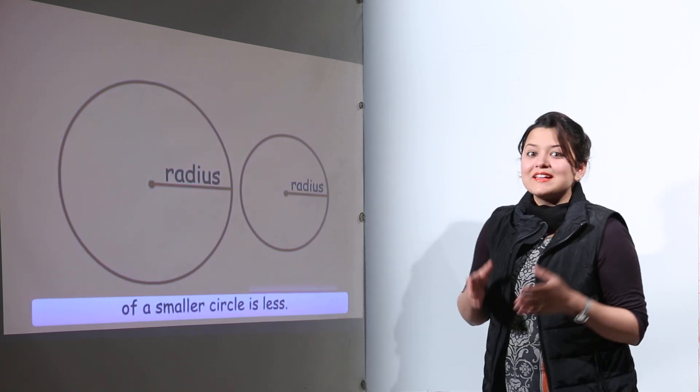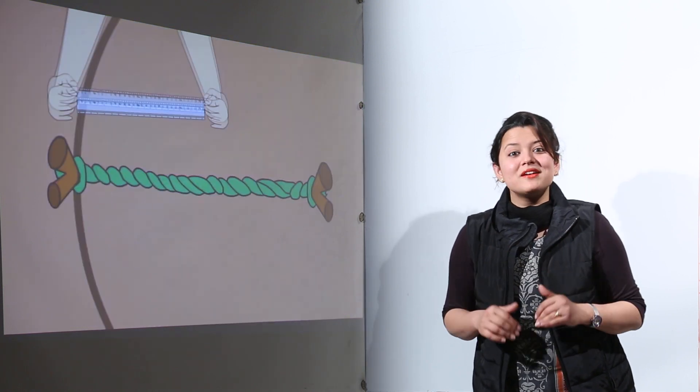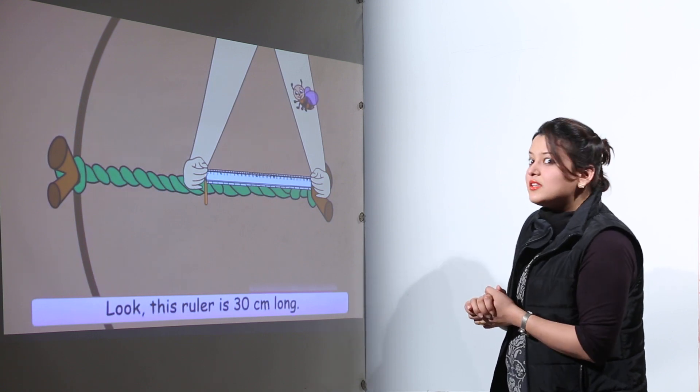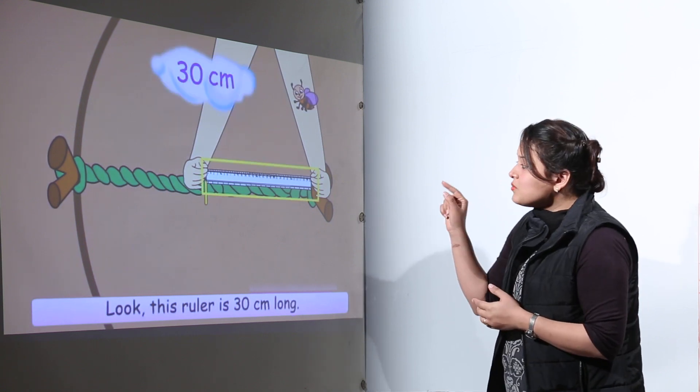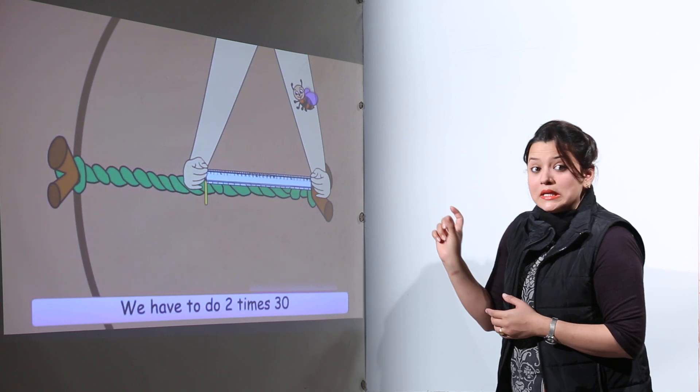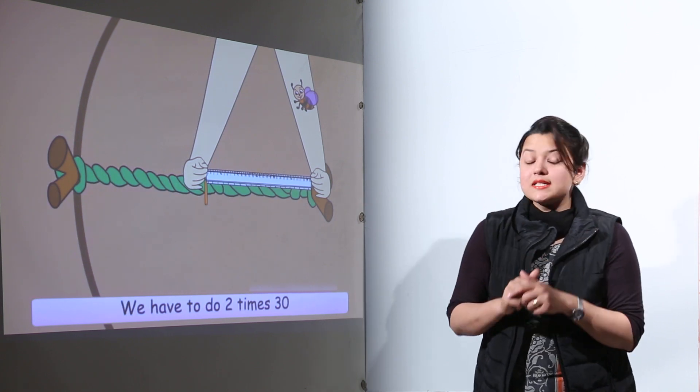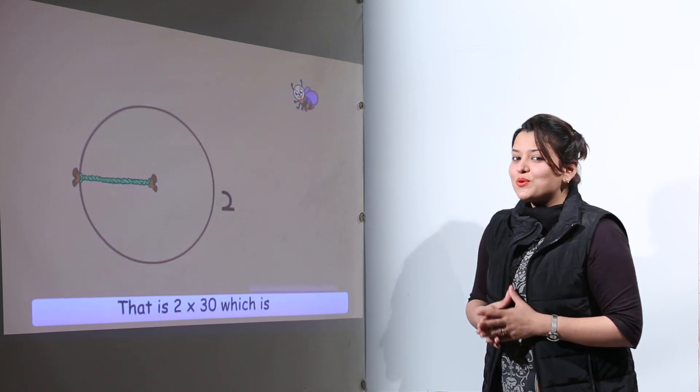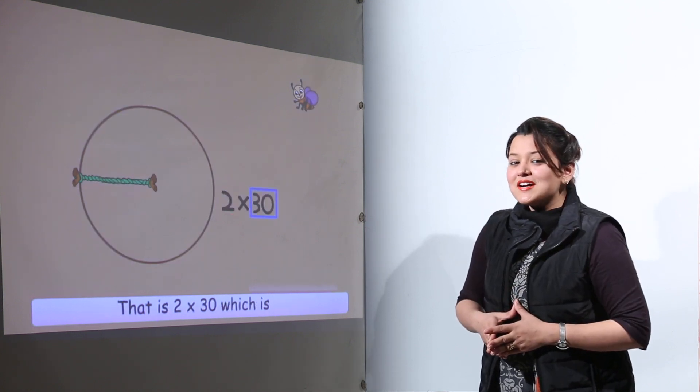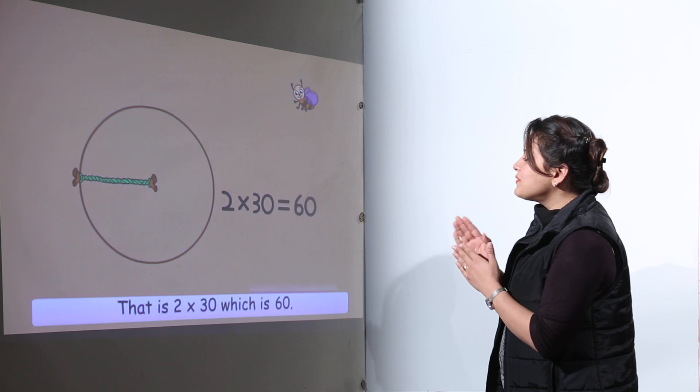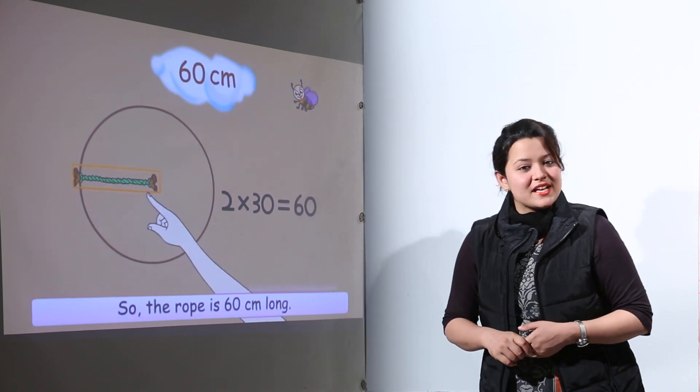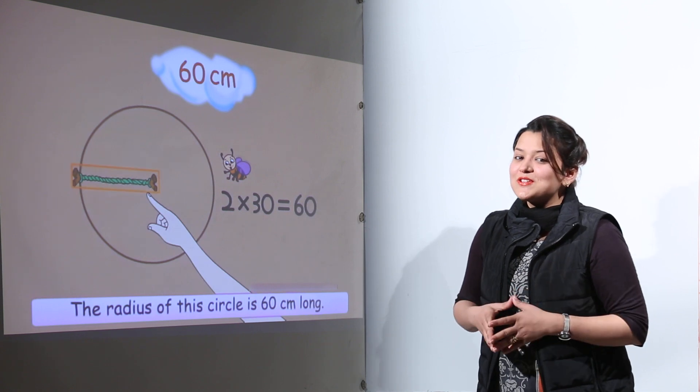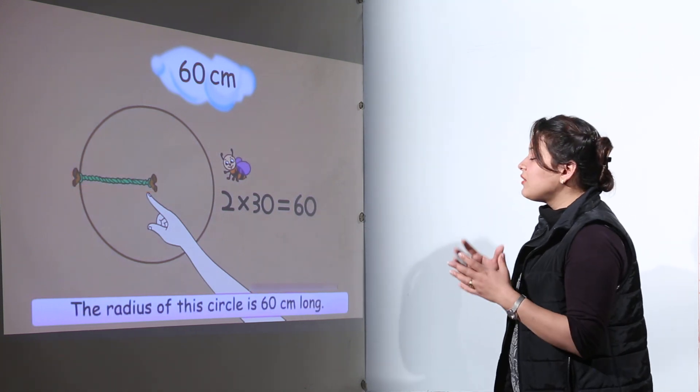The radius of a bigger circle will be bigger than the radius of a smaller circle. We can even measure the radius of a circle. They're using a ruler. The ruler has the measurement of 30 centimeters. Because we've used the ruler two times, the length of radius of this circle would be 2 times 30, which gives us 60 centimeters. Similarly we can measure the radius of many circular objects.